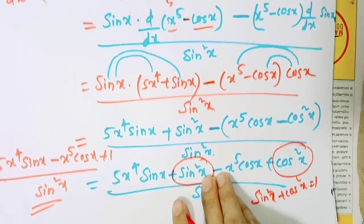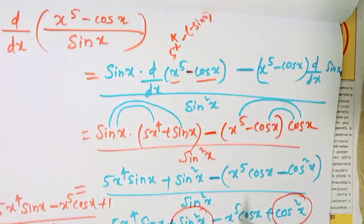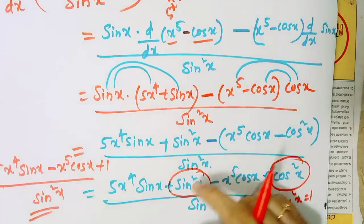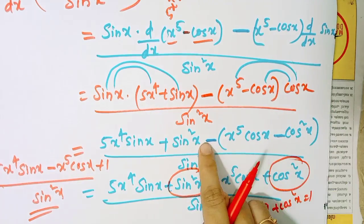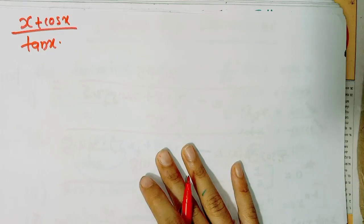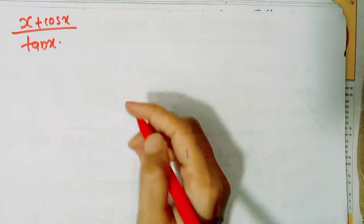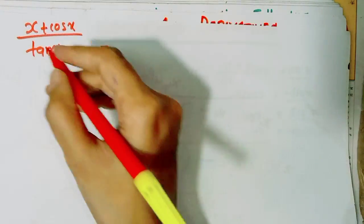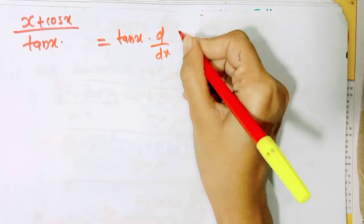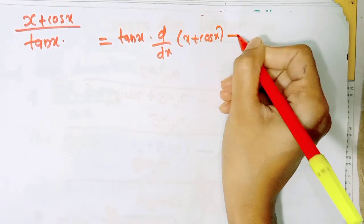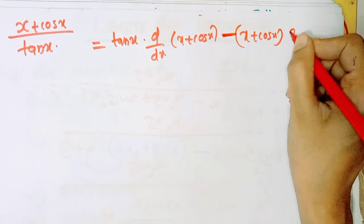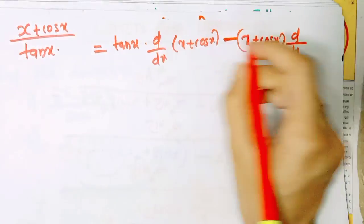For the next question, we use the quotient rule. If we remove the brackets or the negative, this will be plus. Now the function is tan x, and we take the derivative of the numerator function. So this is d by dx of x plus cos x, then minus x plus cos x into the derivative of tan x.